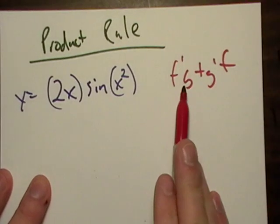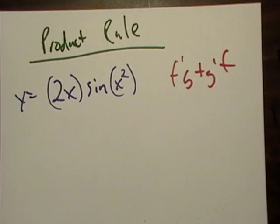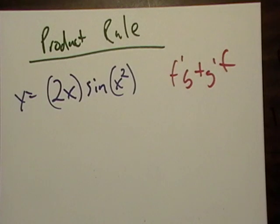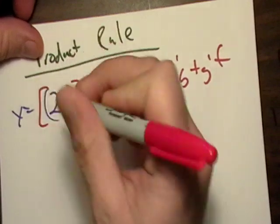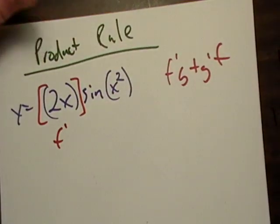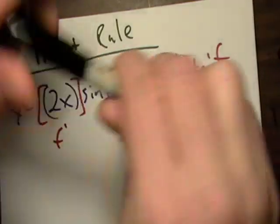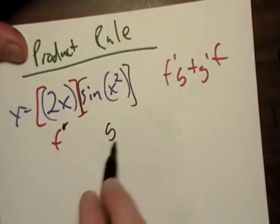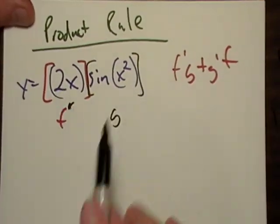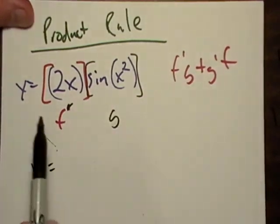F prime times G plus G prime times F, and if I was taking a test I'd just write it at the top of my page and be done with it. Then I wouldn't have to pull it out every single time. Maybe it works for you, maybe it doesn't, but that's how I did it. The goal is you want to treat this like f and the other guy like g.